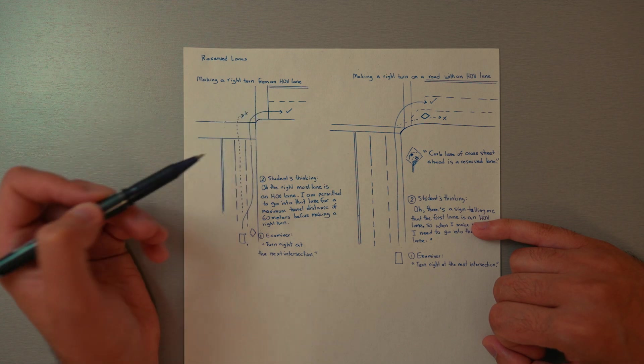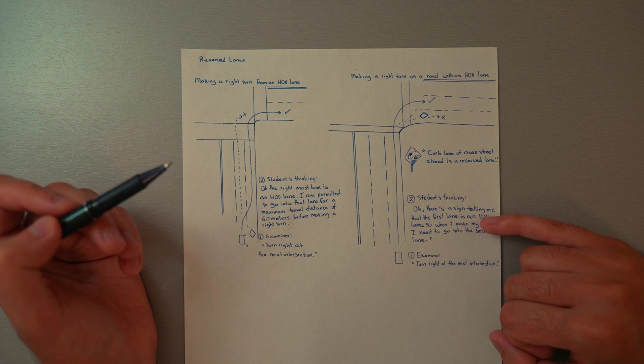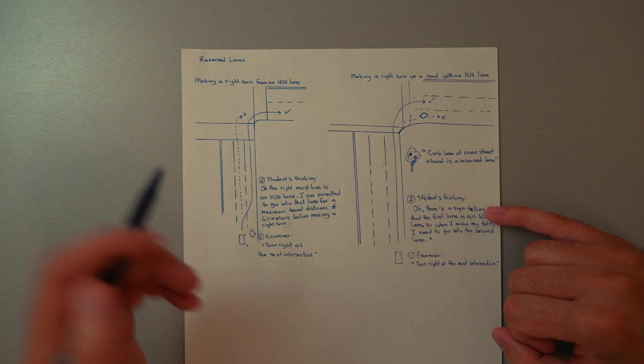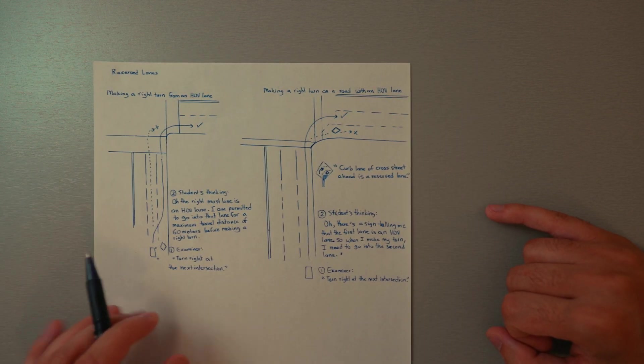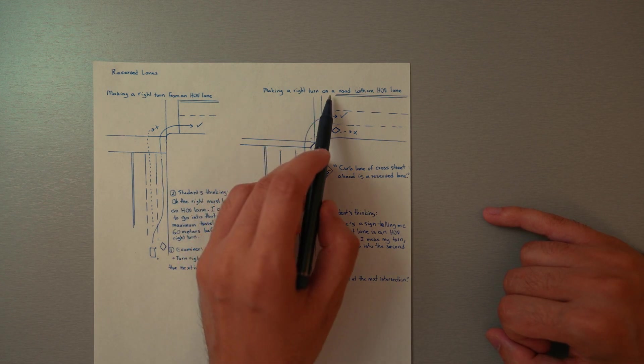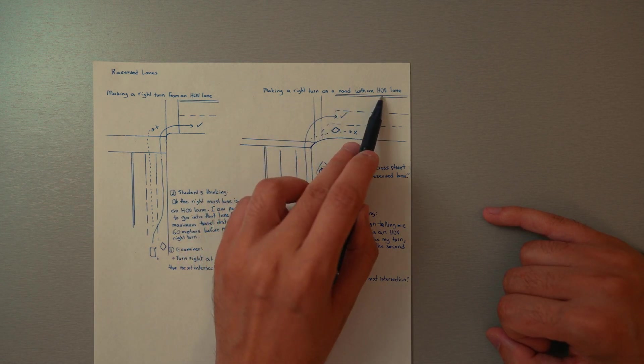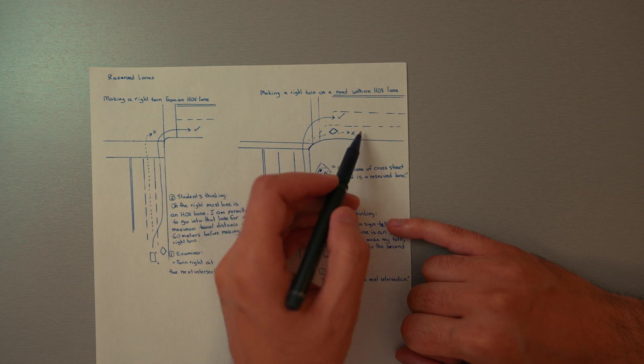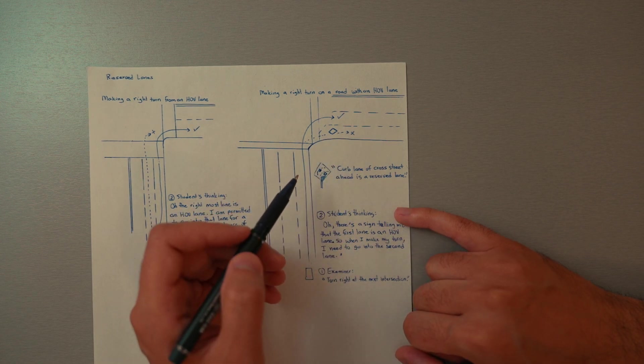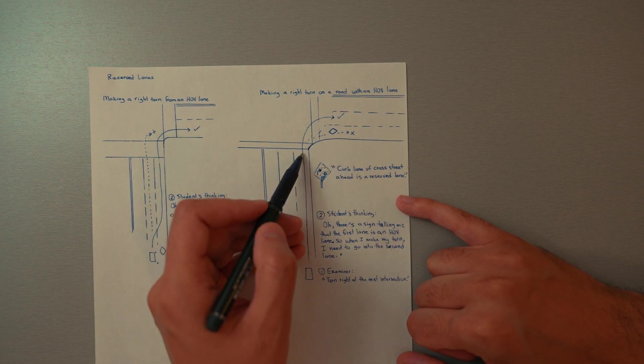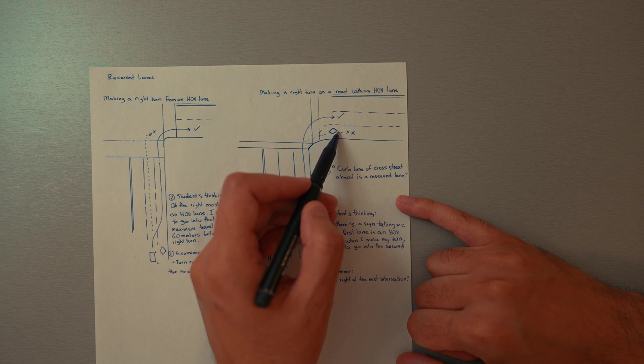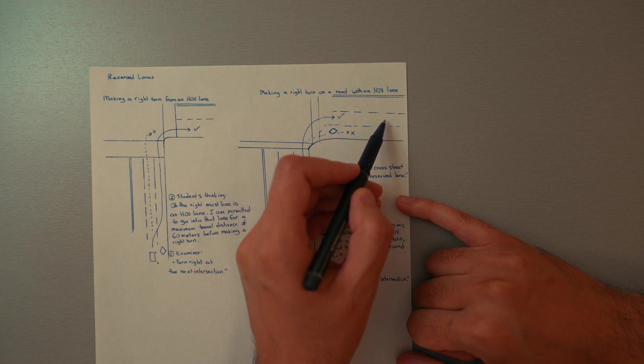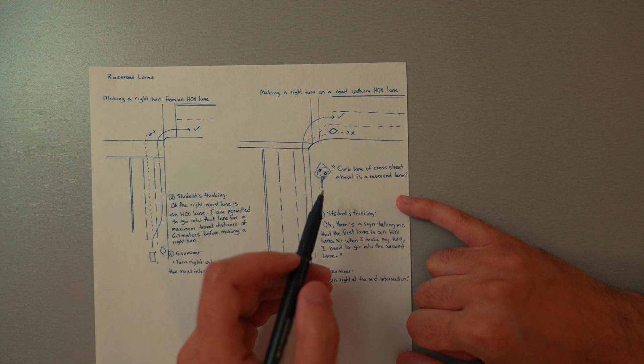So you're turning onto this road and it's got an HOV lane. We're not allowed to go into this HOV lane and then switch out of it and go to another lane. Very often you'll find a sign like this posted that says curb lane of the cross street ahead is a reserved lane.